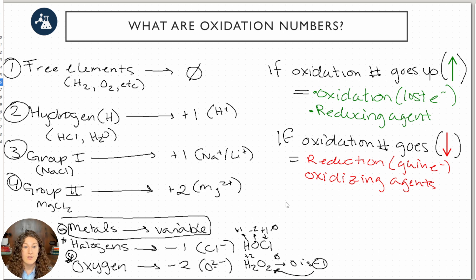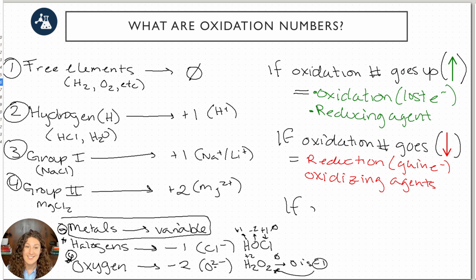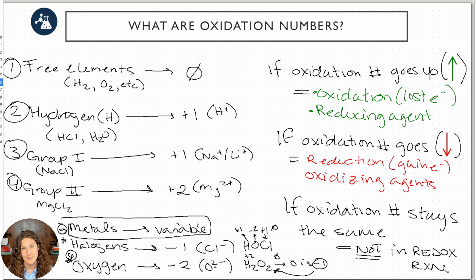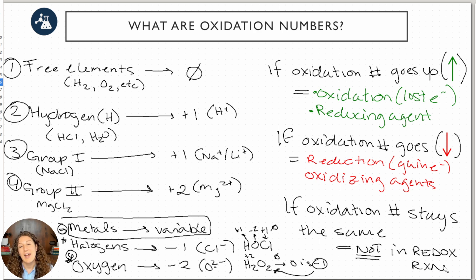If the oxidation number doesn't change, that atom was not participating in the redox reaction — it may have contributed to another component like a double displacement, but it didn't get oxidized or reduced. When we look at a reaction, a decent chunk of the atoms will stay the same, and then we just have two atoms acting as the oxidizing or reducing agents. Let's use our rules and try a practice question.